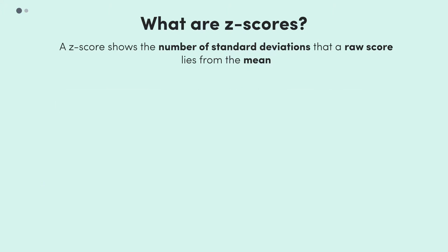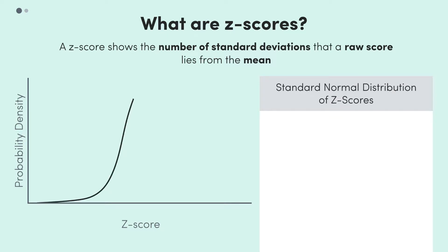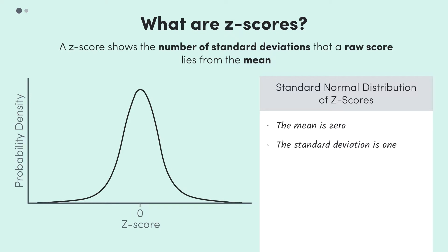Here's another important idea. If we start with a dataset that is normally distributed and then get the Z-scores for every single point, we get a dataset of Z-scores. These Z-scores will make up what is called the standard normal distribution. This is the same dataset, but instead of raw values, we have Z-scores instead. The standard normal distribution has two important features: the mean is 0, and the standard deviation is 1.